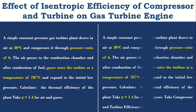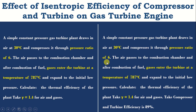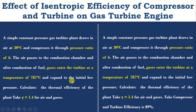In Problem 2, we have the same parameters: 30°C inlet temperature, pressure ratio of 6, T3 is 787°C, and gamma equal to 1.4. But there is one change — in this problem, the compressor and turbine efficiency is 89%, whereas in Problem 1 we took compressor and turbine efficiency as 100%.